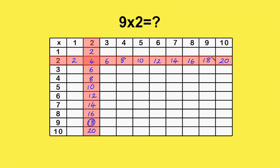Let's also do nine times two. This time, you go down the ninth column until you reach the second row. Again, the answer's eighteen, because nine times two equals two times nine.